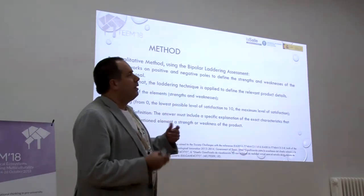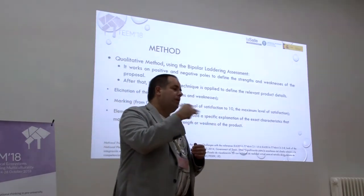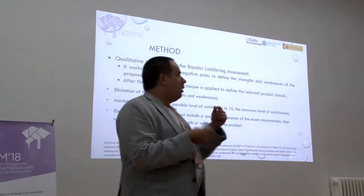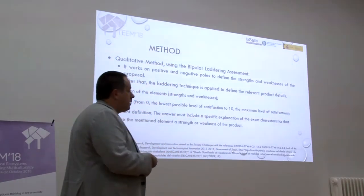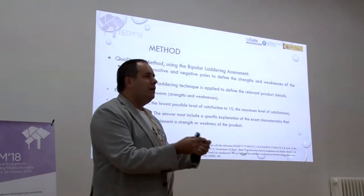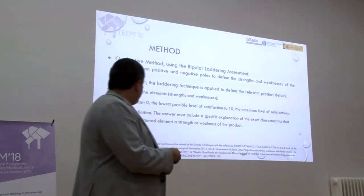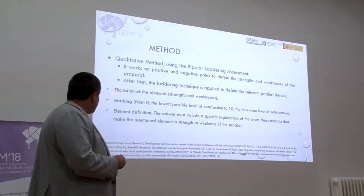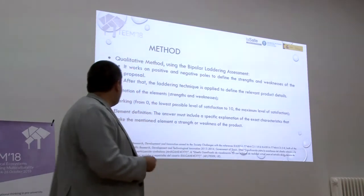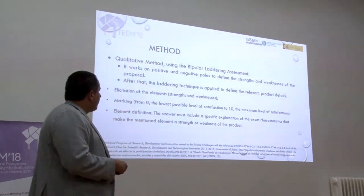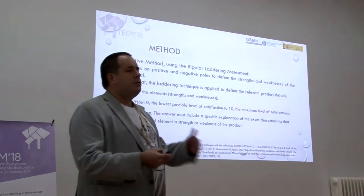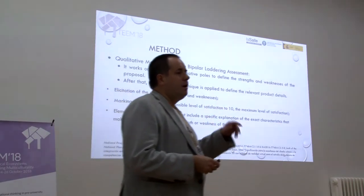This qualitative assessment is based on an ambipolar-laden assessment. Why this type? Because if you select a quantitative assessment, you are thinking about some type of questions. But using an ambipolar-laden assessment that has three steps, it is easier to understand the comprehension of the usability of the elements as thought about by the users. The three steps are: first, the recitation of elements, positive and negative; second, marking these positive and negative elements; and finally, the answer must include a specific explanation to improve.